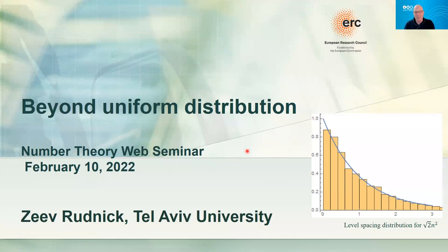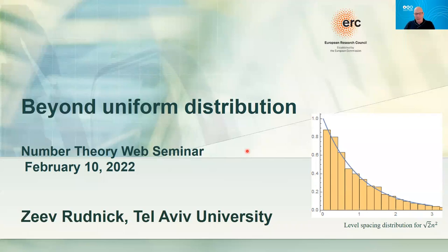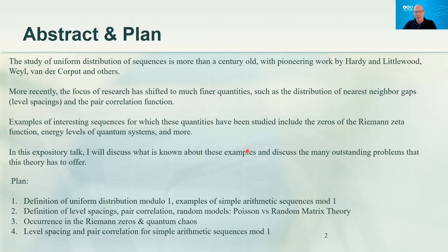Welcome everyone and thanks for coming. As Philip says, this is my second time in the seminar — the last one was almost two years ago. It's hard to believe we've been doing this for two years. Hopefully next time there will be other options. What I want to discuss today is what's been going on beyond the classical theory of uniform distribution in the last few years. This is a very introductory level talk, so I apologize in advance to people who are more expert. It's more for people from outside the subject. The plan is to give a five-minute survey of the classical theory of uniform distribution.